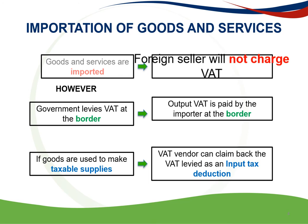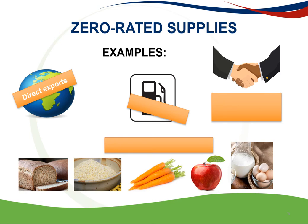If goods that are imported are used to make taxable supplies, the VAT vendor can claim back the VAT levied on the importation as an input tax deduction. Supplies charged at the zero rate are often referred to as zero-rated supplies. This means that they are taxable supplies although they are charged with VAT at 0%, which enables the vendor to claim back all the input VAT.